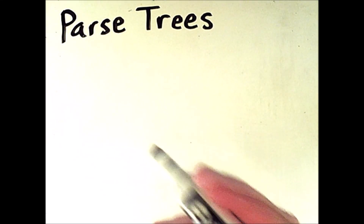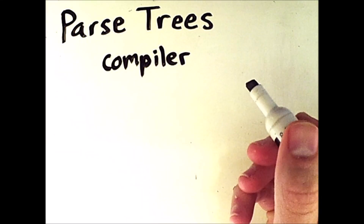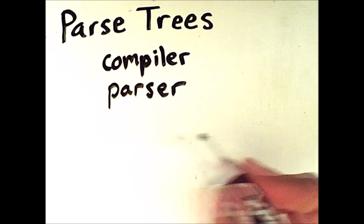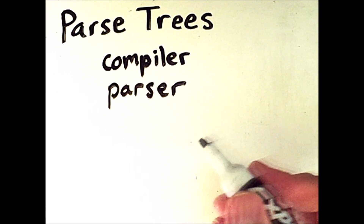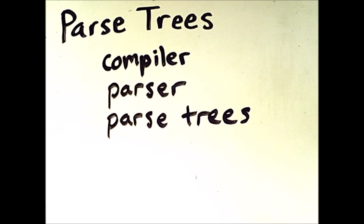In order to design a compiler, a way of parsing the text of a program is needed. This task is accomplished by a parser, which uses a grammar to create parse trees, which are graphical depictions of grammatical derivations. In order to discuss parse trees, we will need an example grammar to work with.